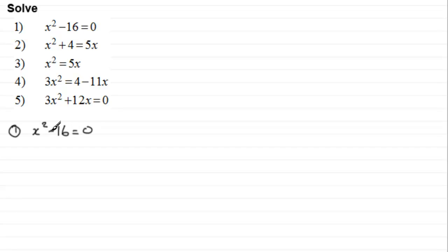And this is the difference of two squares. It factorises to (x - 4) multiplied by (x + 4). Obviously you can have it the other way around, (x + 4) times (x - 4), and this equals zero.